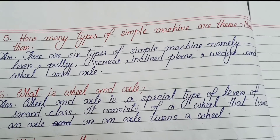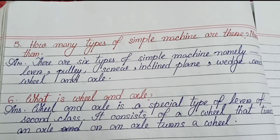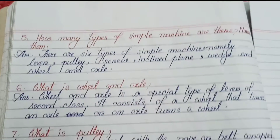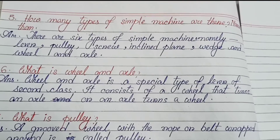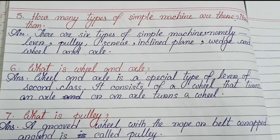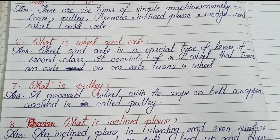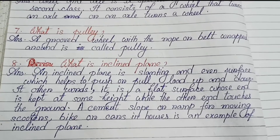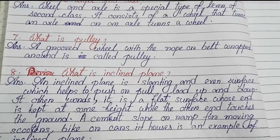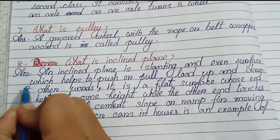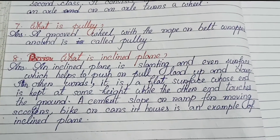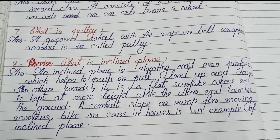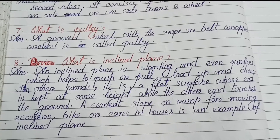Five: How many types of simple machines are there? There are six types: lever, pulley, screw, inclined plane, wedge, and wheel and axle. Six: What is wheel and axle? Wheel and axle is a special type of lever of second class; it consists of a wheel that turns an axle or an axle that turns a wheel. Seven: What is a pulley? A grooved wheel with a rope or belt wrapped around it is called a pulley. Eight: What is an inclined plane? An inclined plane is a slanting, even surface which helps to push or pull a load up and down. It is a flat surface whose one end is kept at some height while the other end touches the ground. A cement slope or ramp for moving scooters, bikes or cars in a house is an example of an inclined plane.